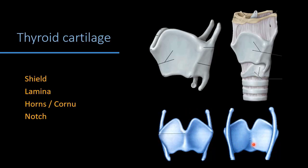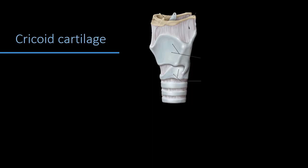In anterior view we see the superior thyroid notch; in posterior view, both laminae meet in the midline at an angle of nearly 90 degrees in males and more in females. That is the reason Adam's Apple is more prominent in males, and also the reason for the roughness of voice in males.